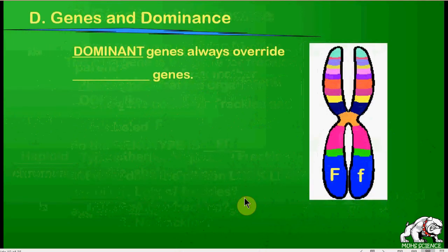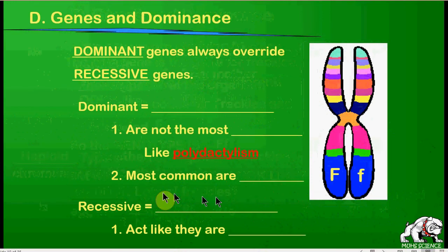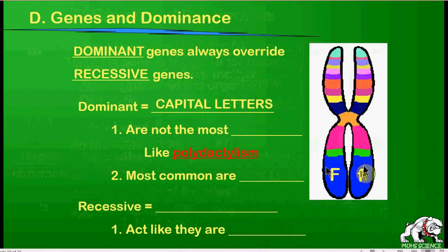In complete dominance, dominant genes always override recessive genes. The dominant gene is labeled with capital letters. The reason freckles are labeled with a capital F is because freckles are being called the dominant trait in humans — though that may not actually be true.